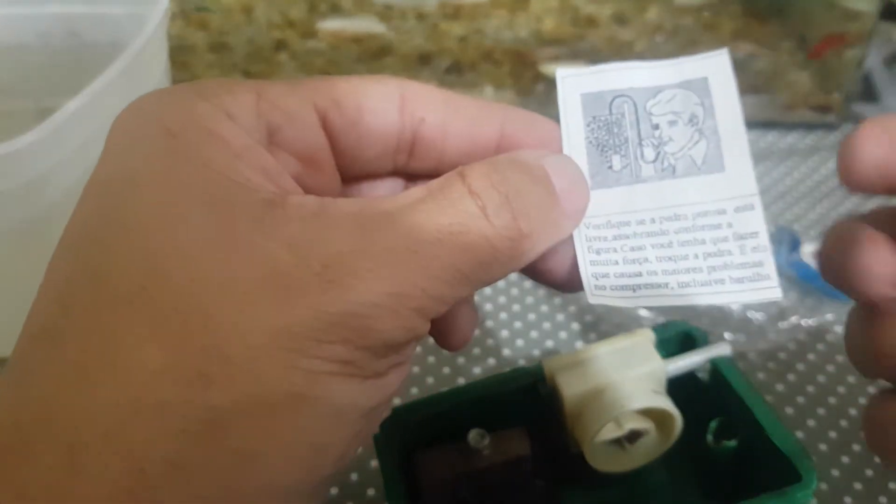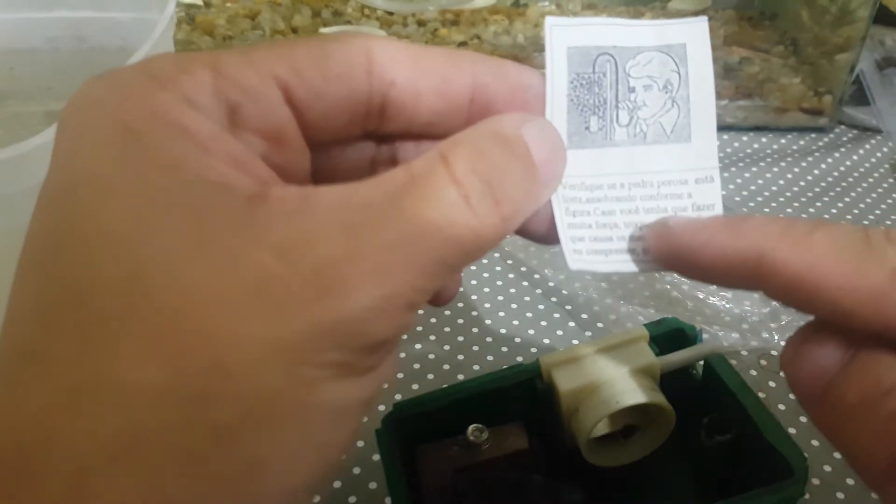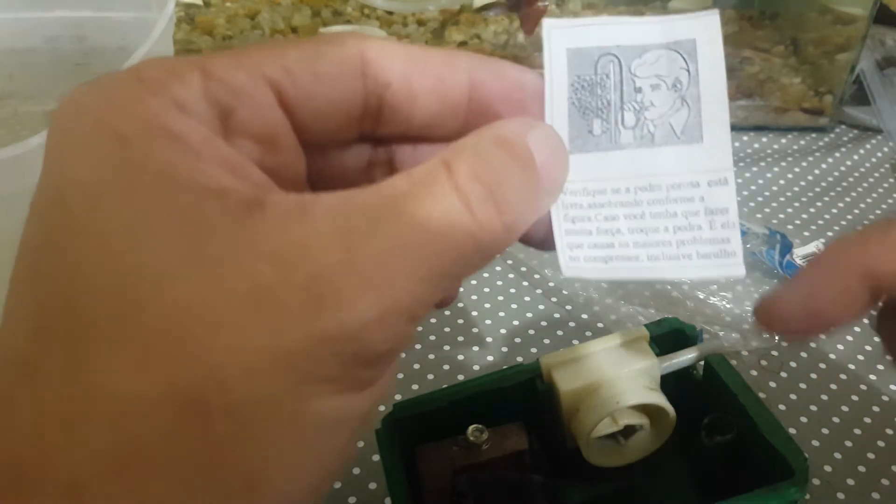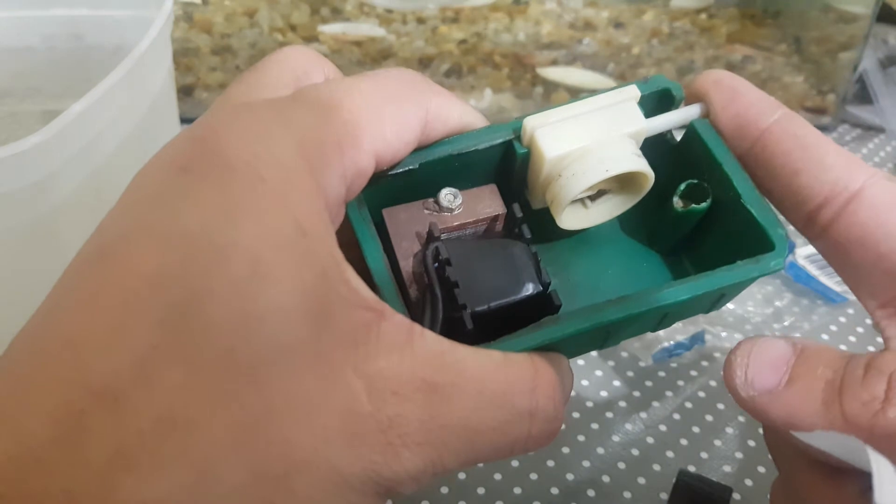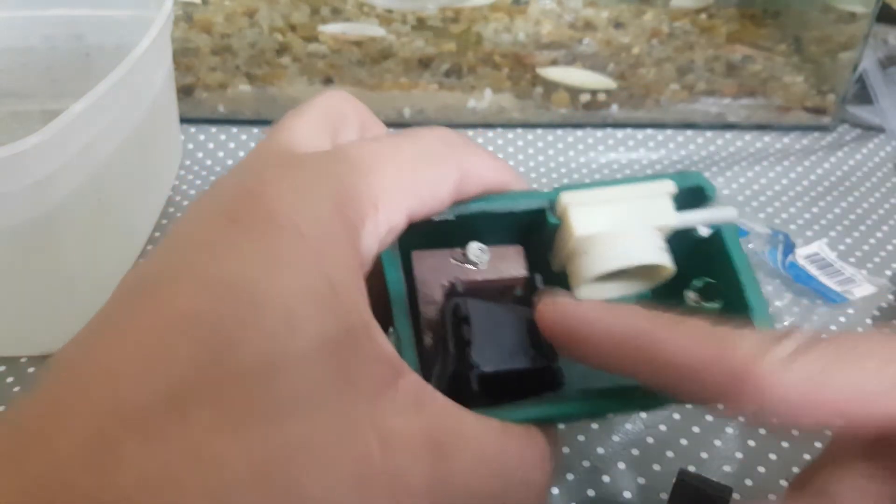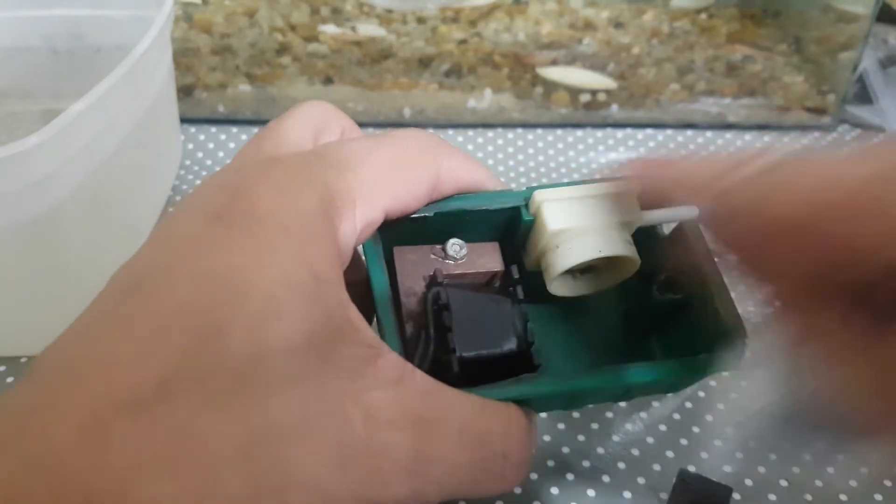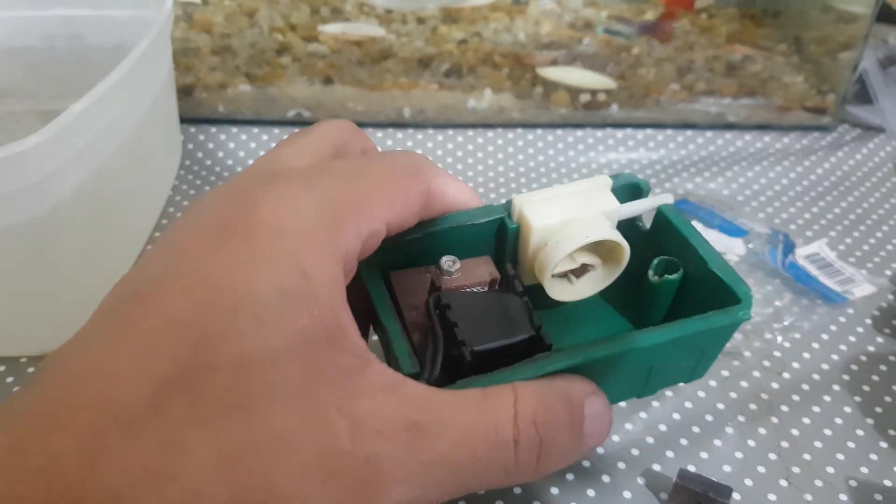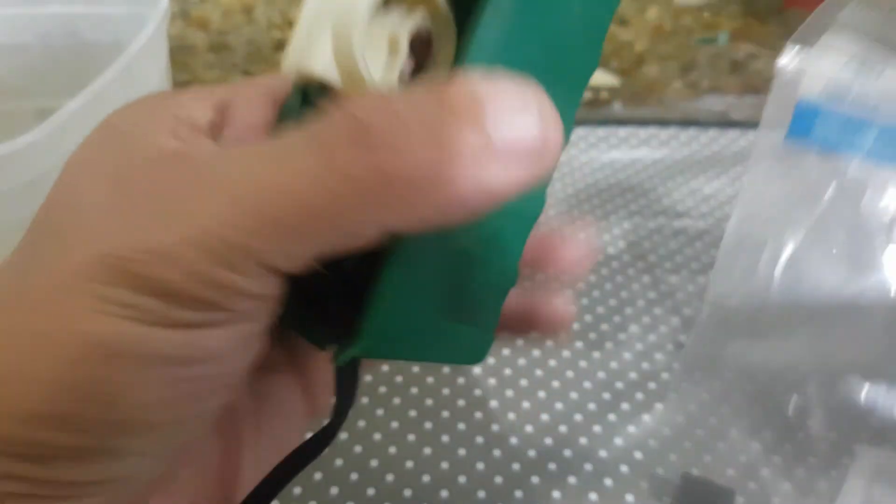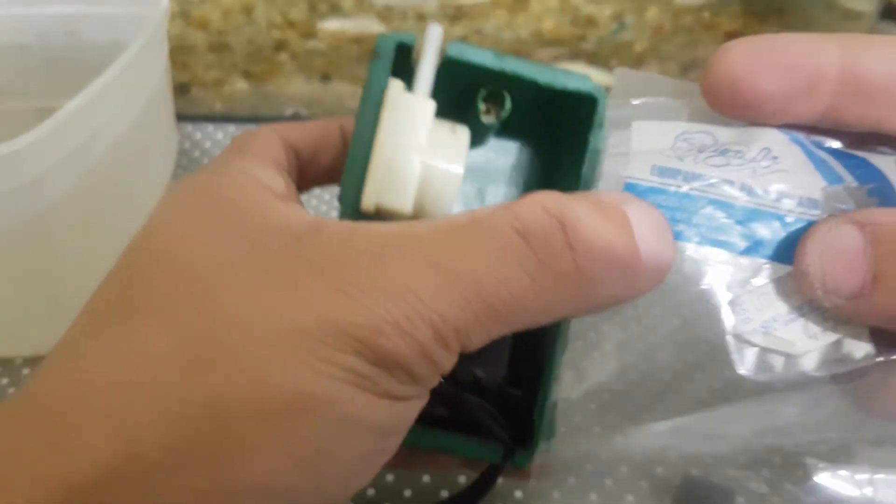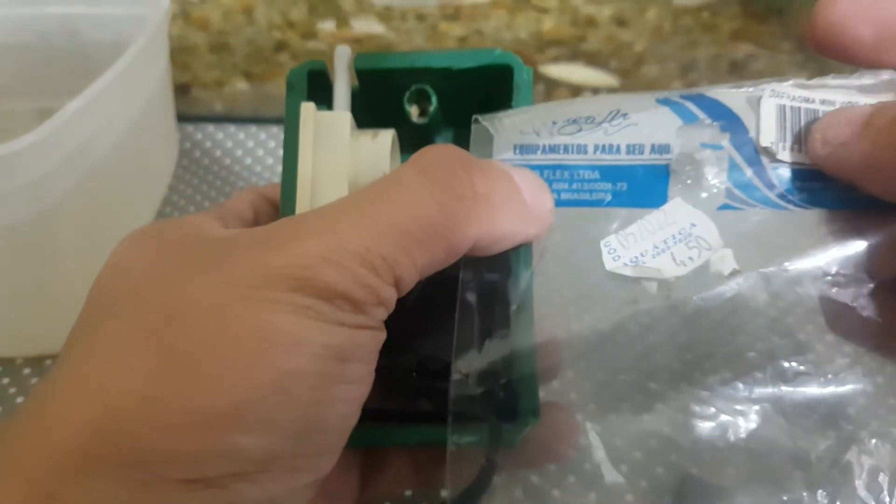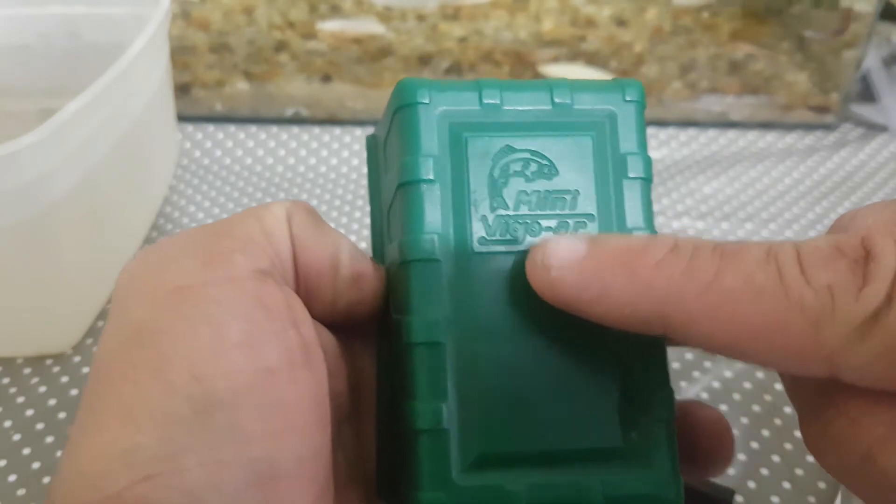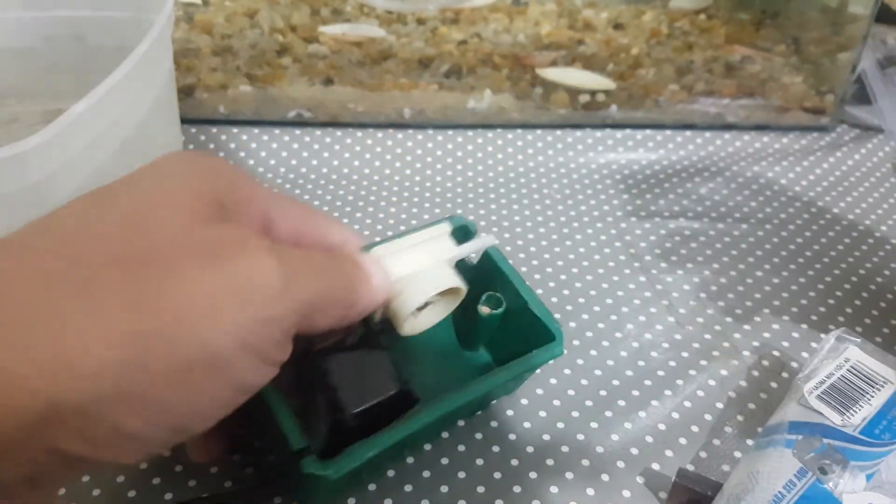Ele vem até com um dizerzinho aqui, achei muito bacana, muito interessante. Verifique se a pedra porosa está livre, assoprando conforme a figura. Se você tem que fazer muita força, troque a pedra. É ali que causa maiores problemas no compressor, inclusive o barulho. É verdade, quando o compressor está ligado e você tapa a saída de ar, o barulho aumenta porque aumenta a vibração. O reparo que eu comprei é para a minha bomba Vigoflex, que é da bomba diafragma mini Viguar.